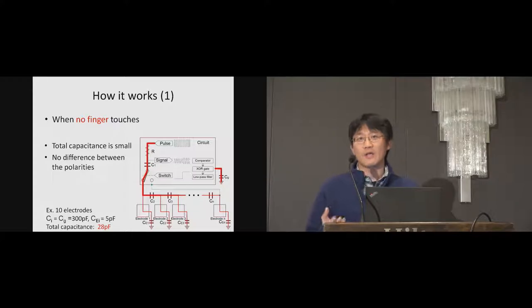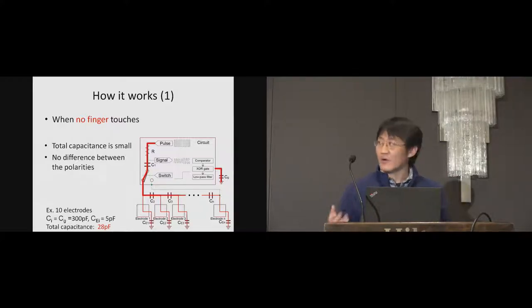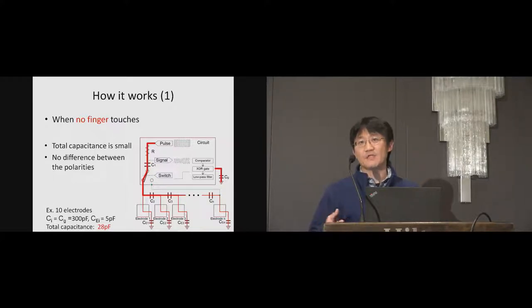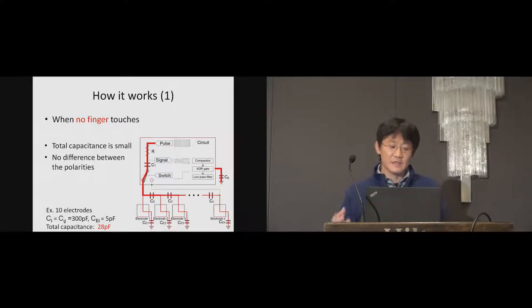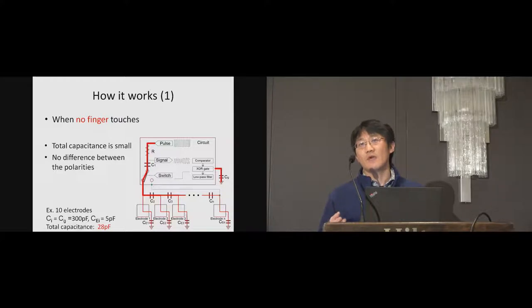I explain how our technique works. This figure illustrates the situation when no finger touches. The red line represents the current flow. The total capacitance measured from the circuit is small. In case that CI and CZ are 300 picofarad and CE is 5 picofarad, the total capacitance is calculated as 28 picofarad. Even when the switch changes the polarity, the total capacitance does not change.